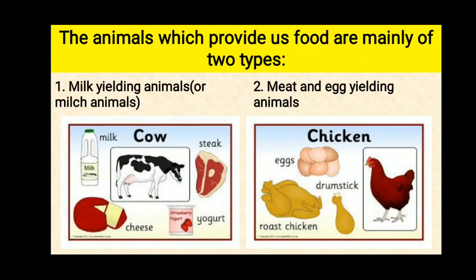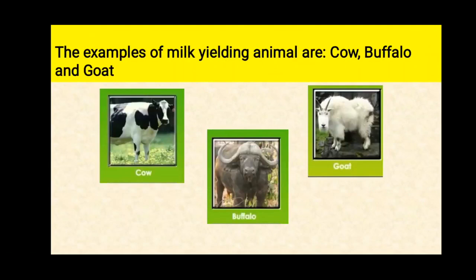One is milk yielding animals or milk animals, and the second one is meat and egg yielding animals. The examples of milk yielding animals are cow, buffalo and goat. Milk is a perfect natural diet. Milk and its products called dairy products — like butter, ghee, curd and cheese — are highly nutritious foods.